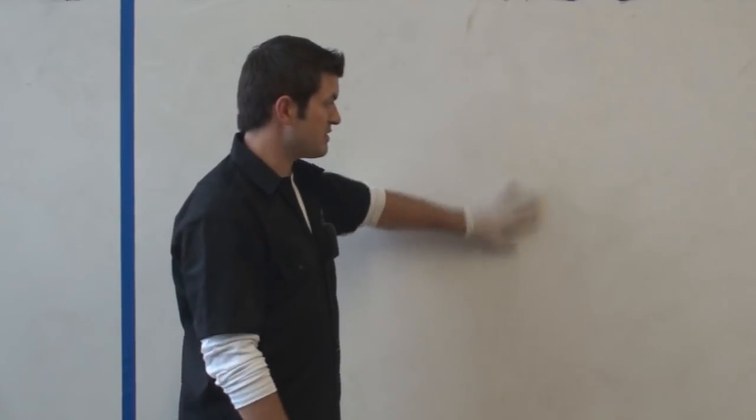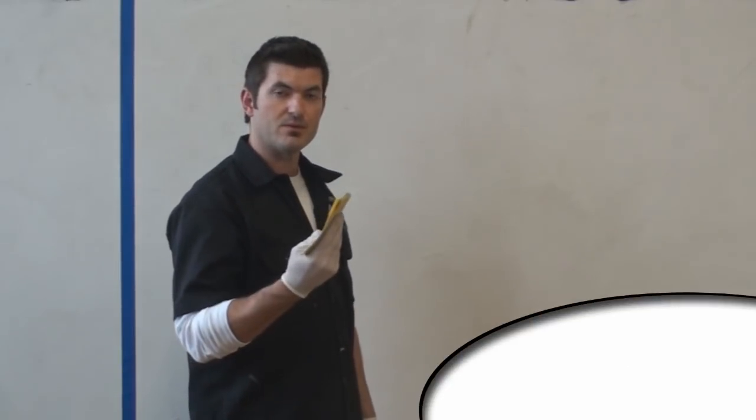So my plaster text all dried up, so now what I'm going to do is just knock down some of the high ridges with the 220-grit sandpaper.